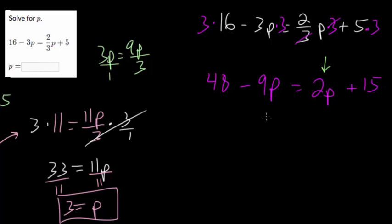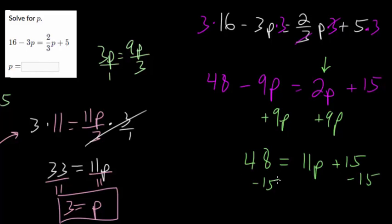Put all the variables here. So add 9p on each side. You get 48 is 11p plus 15. Subtract 15 on each side. And you get that 33 is 11p, which is what we had, which leads to p being equal to 3. So we got the same answer in both cases. And that's another way to check your work. If you solve it with two completely different methods and get the same answer, then that's another way to feel confident that you're doing it correctly.